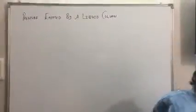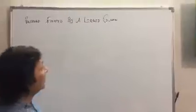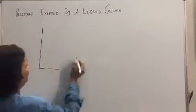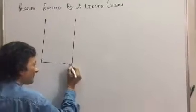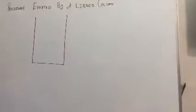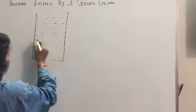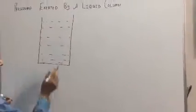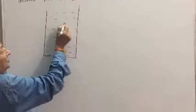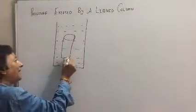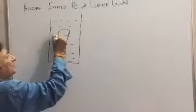Students, we're examining pressure exerted by a liquid column. We have a trough, and this trough is full of liquid. We fill it with liquid. Within the trough, within the liquid, we assume there is a cylinder of liquid—an imaginary cylinder of liquid.